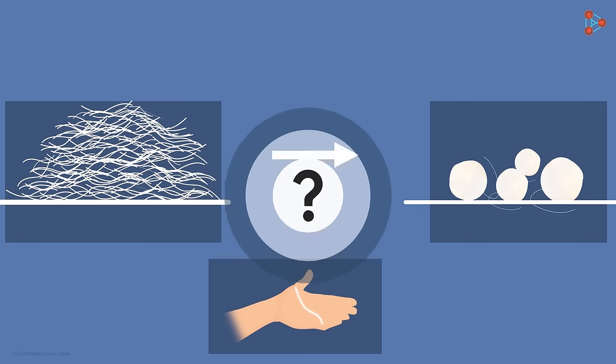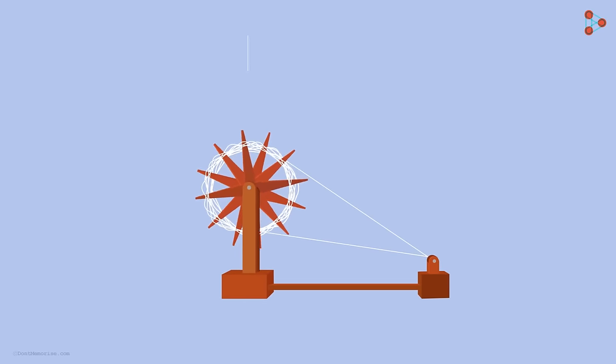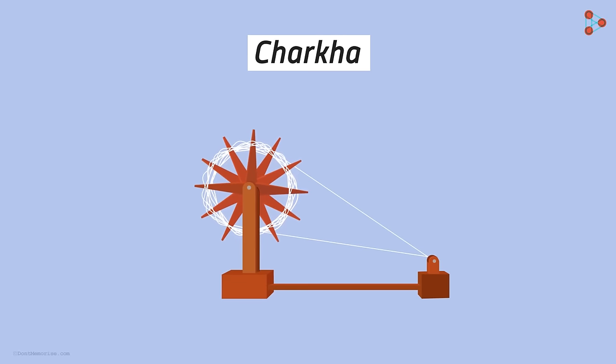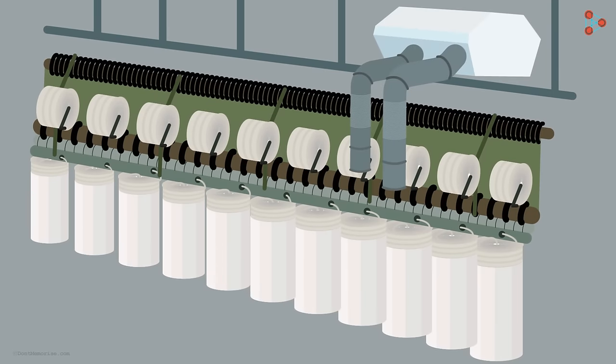Of course, there are machines which help us do that. In countries like India, since many years the traditional equipment like charkha were used. However, with the advancement in the field of technology, newer machines to spin the threads into yarn are now available.